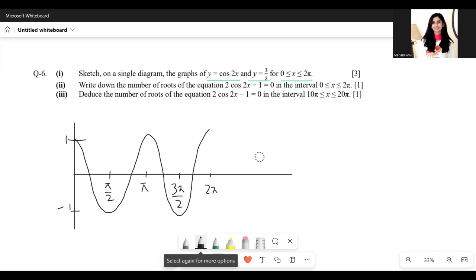And the other one is y equals half. This is going to be a horizontal line passing through half. So we've drawn both the graphs.